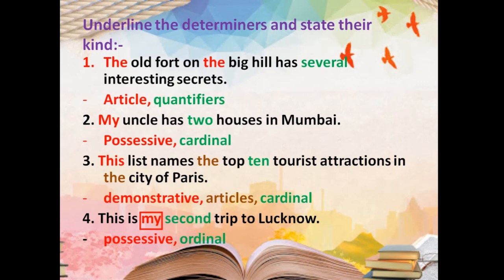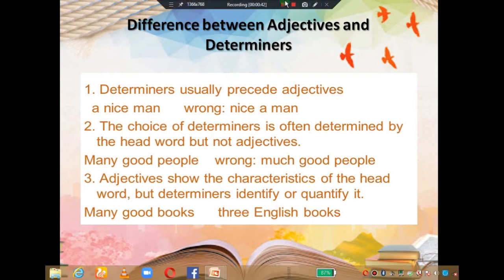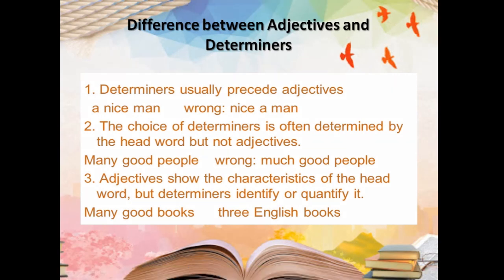I hope you have understood all these. This kind of exercise is also given in your book — you can do the remaining sentences there. Now, difference between adjectives and determiners. Sometimes you may ask: adjectives and determiners seem the same — we have demonstrative adjectives and possessive adjectives. So what is the difference? Determiners usually precede adjectives. For example: 'a nice man' — 'a' is the determiner, 'nice' is the adjective, 'man' is the noun. You cannot say 'nice a man' — that would be wrong.